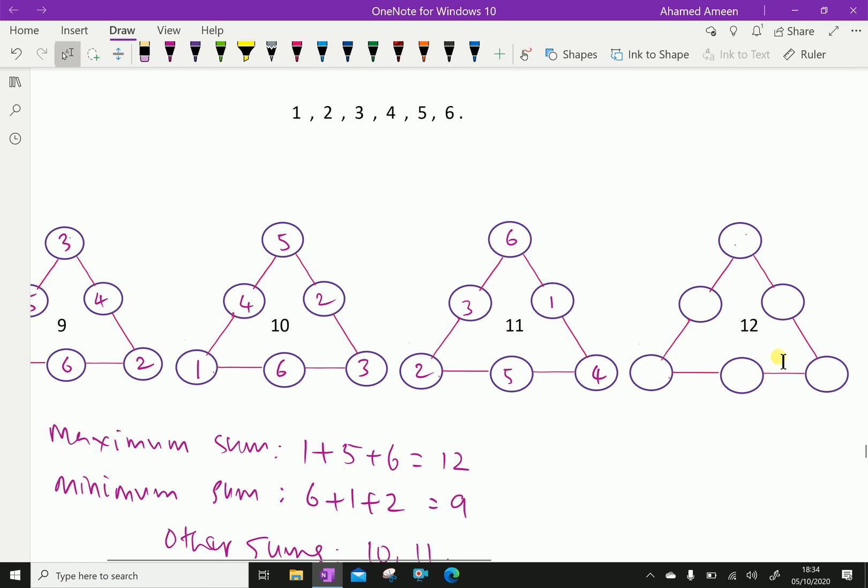So, next one, 12. We have to get the maximum sum 12. For that, for getting the minimum, we are getting 1, 2, 3 in this corner. And for the maximum, we have to use the last three numbers as corner numbers. That is, 4, 5, 6.